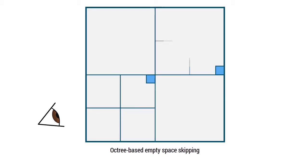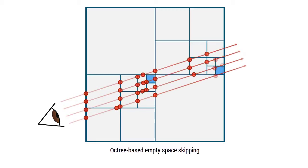The current state of the art for empty space skipping in large-scale volume rendering is to use an octree for subdividing space hierarchically and skipping over empty octree nodes.